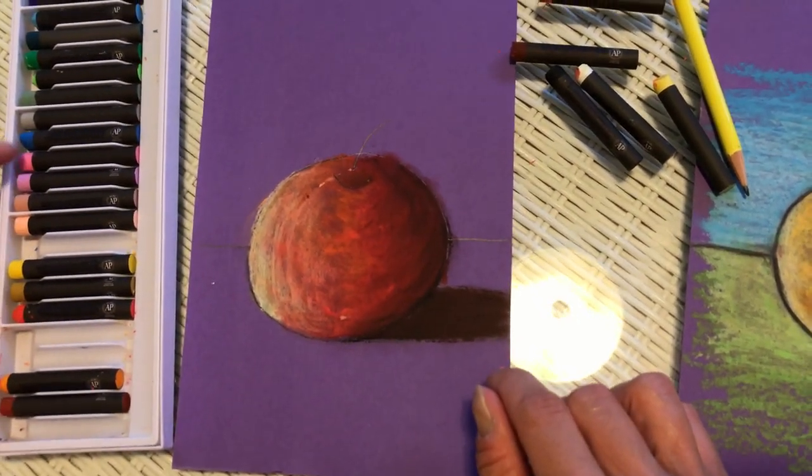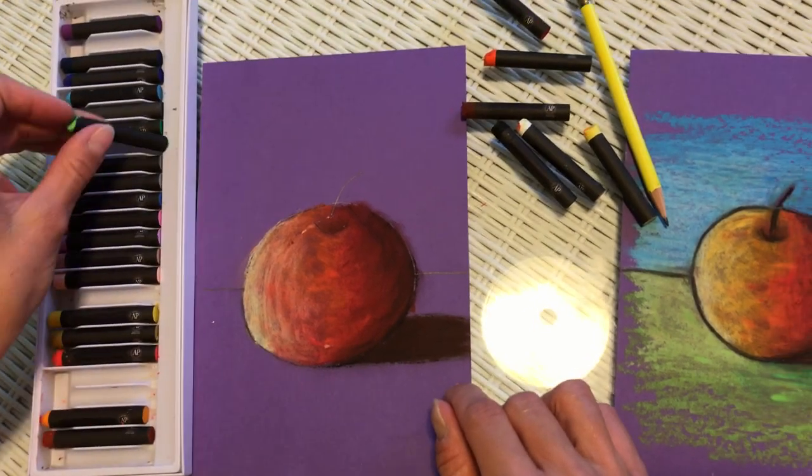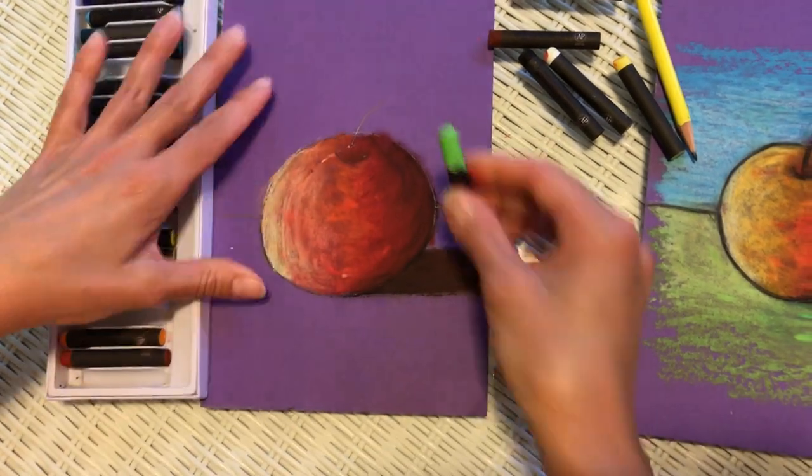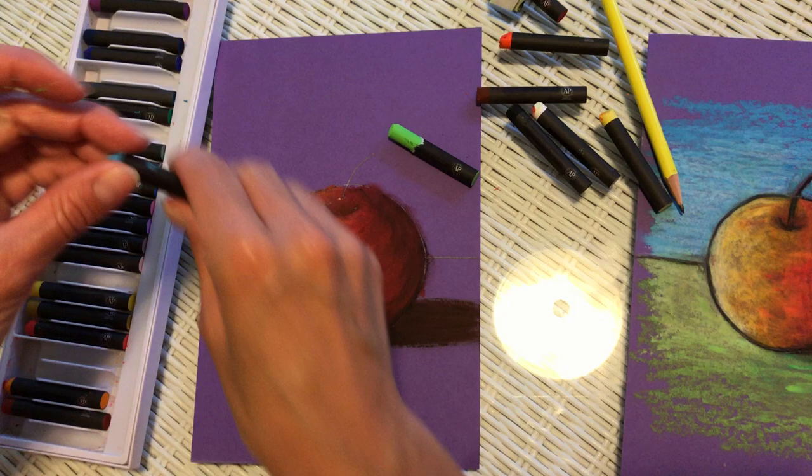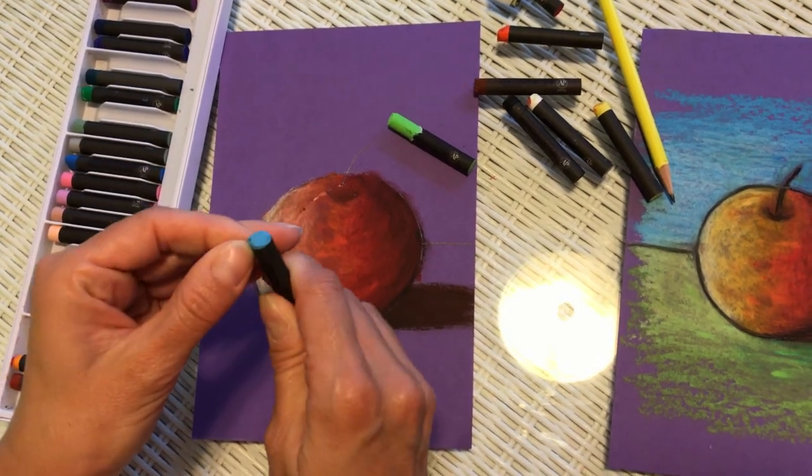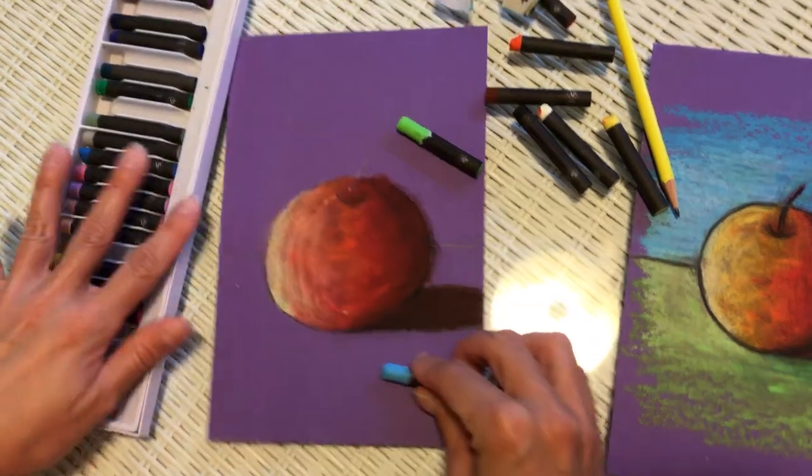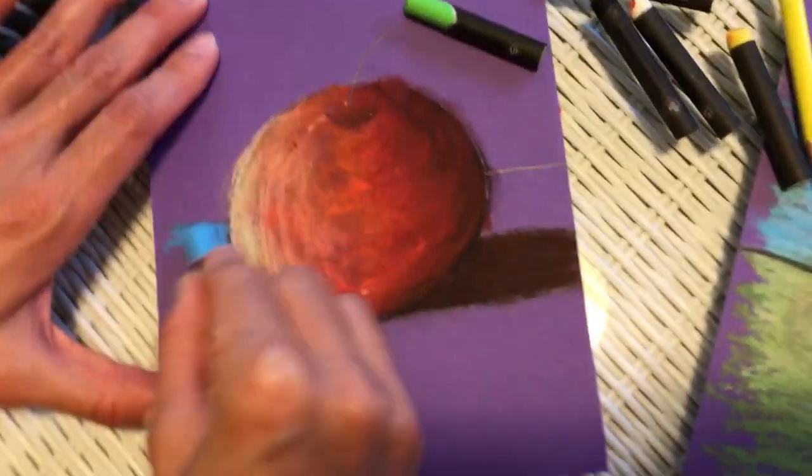So, for example, I could use green, light green. And I could use light blue. So, I'm going to start applying the colors around my object.